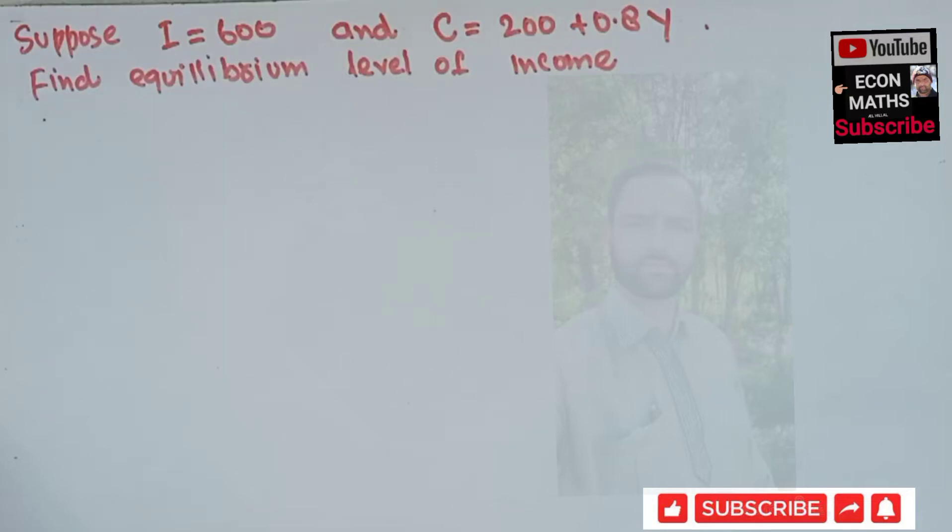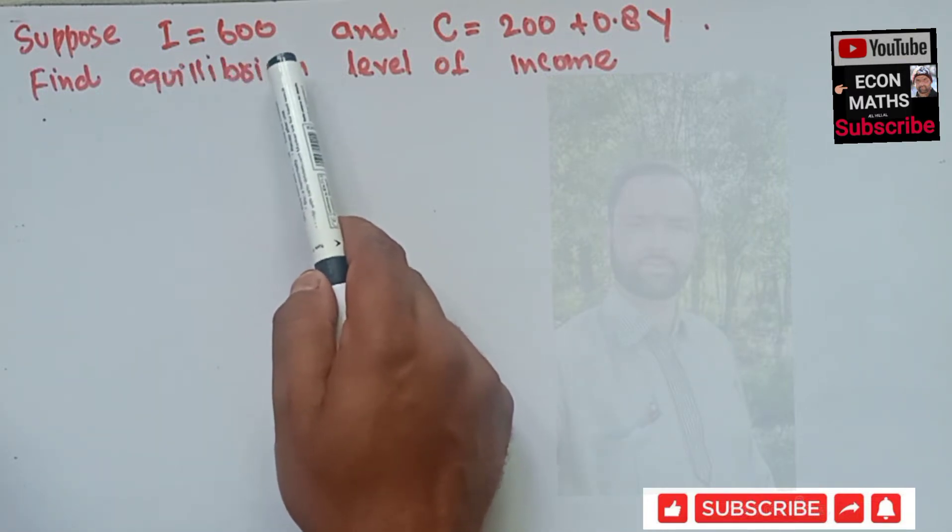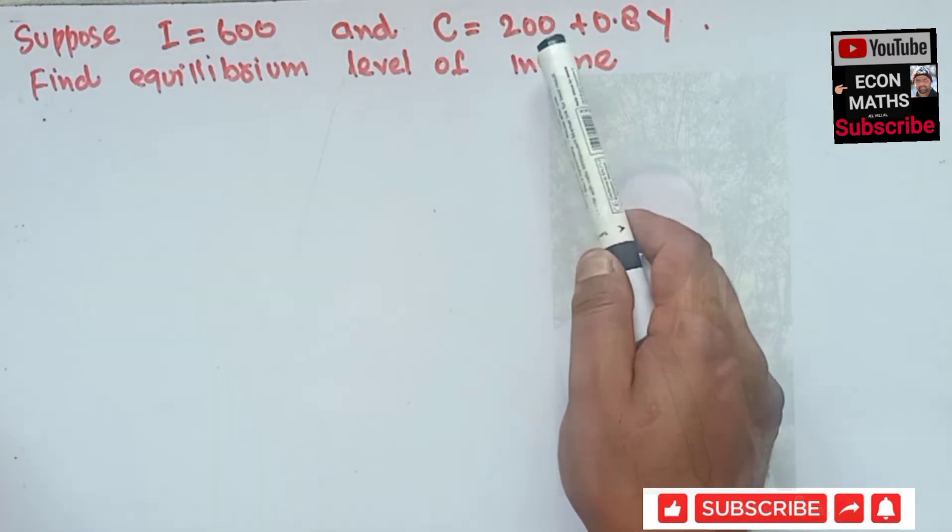In this video we will try to solve a numerical on finding the equilibrium level of income from the given investment and consumption function. The question is: suppose investment is 600 and consumption function is given by 200 plus 0.8Y. Find the equilibrium level of income.